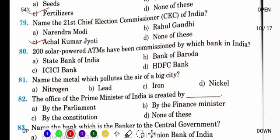200 solar powered ATMs have been commissioned by which bank in India? कौन से bank ने solar से चलने वाले 200 solar powered ATMs लगाए? It is ICICI Bank.